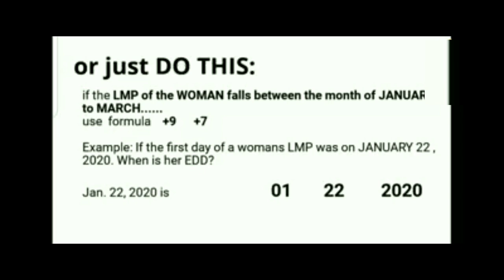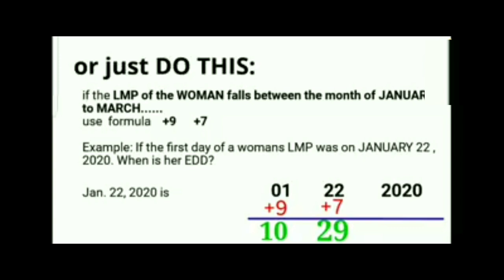January 22, 2020 is written as 01, 22, 2020. Applying the formula: 1 plus 9 is 10, and 22 plus 7 is 29. So the mother's expected date of delivery is October 29, 2020. The year stays 2020 because we're still within the same year.